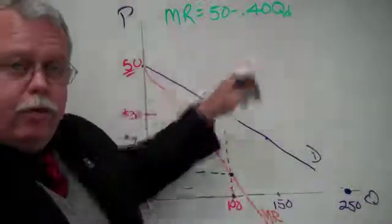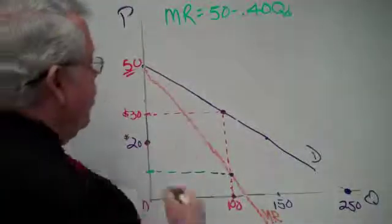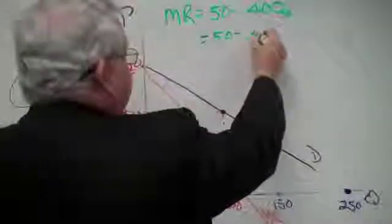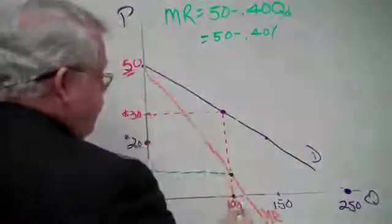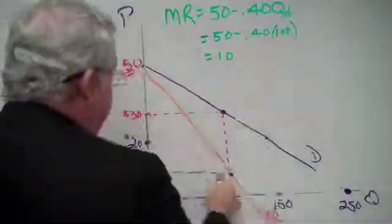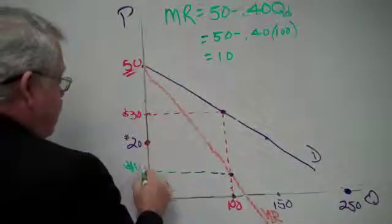We can solve that from here pretty quickly. What do we got? Marginal revenue is 50 minus 0.40, and what's the quantity here? 100. 40% of 100 is 40. 50 minus 40. The marginal revenue is $10.